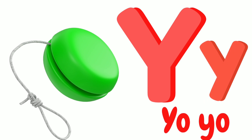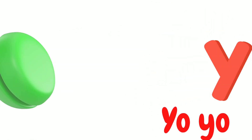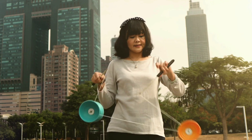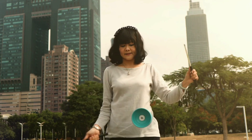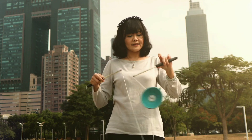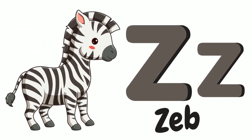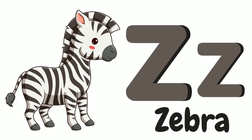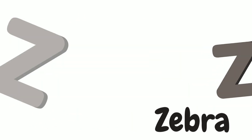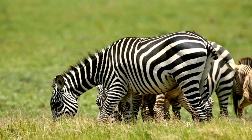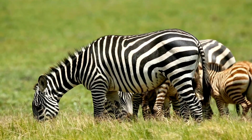Y is for Yo-Yo. Yo-yo, yo-yo. This is a yo-yo. Z is for Zebra. Zebra, zebra. This is a zebra.